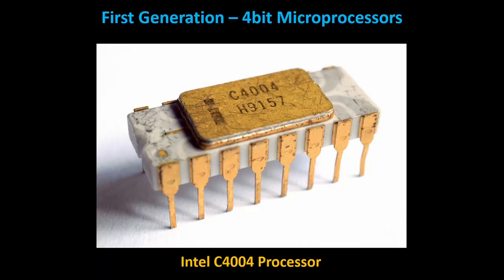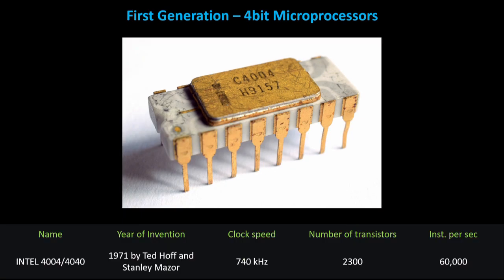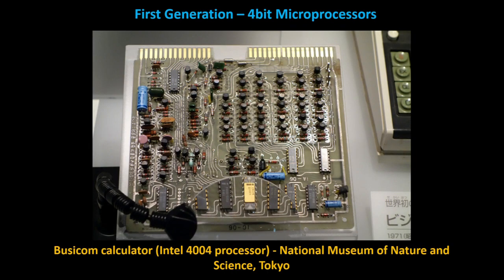The first generation of microprocessors were introduced in the early 1970s, and they were 4-bit microprocessors, primarily used in calculators and other simple devices. The first commercially successful microprocessor was the Intel 4004, which was released in 1971. It had a clock speed of 740 kHz and could perform around 60,000 operations per second. These microprocessors had limited memory and lacked many of the features of later generations, and were used in calculators, simple electronic devices, and early gaming consoles.